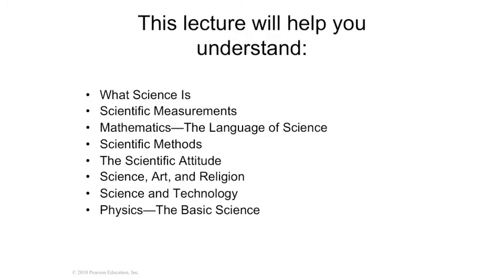Chapter one deals a lot with the basics. We're going to look at measurements — how to measure something to where it's accepted by everyone scientifically — how most of the world's patterns and relationships have a mathematical relationship, and how you go about treating those relationships scientifically. So what is the scientific method, what is your attitude when approaching science, and what science is and what science is not.